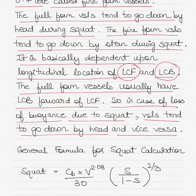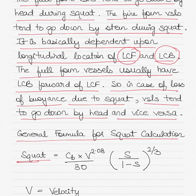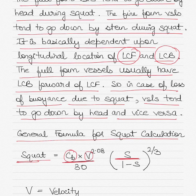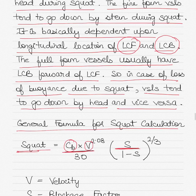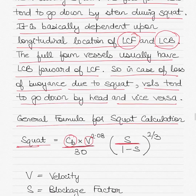In such cases, the general formula for squat calculation is: squat equals block coefficient multiplied by V raised to the power of 2.08, divided by 30, multiplied by the blockage factor S divided by (1 minus the blockage factor), with that bracket raised to the power of 2/3. The blockage factor is the ratio of the vessel's underwater cross-sectional area to the cross-sectional area of the channel it is transiting.